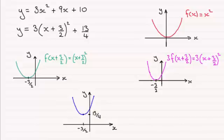So let's just write that in there. The minimum is minus 3 over 2, 13 over 4.